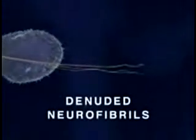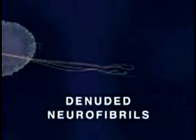Consequently, the neurite's microtubules begin to disassemble into free tubulin molecules, leaving the neurite stripped of its supporting structure. Ultimately, both the developing neurite and its growth cone collapse, and some denuded neurofibrils form aggregates or tangles, as depicted here.